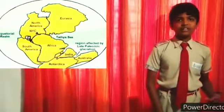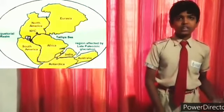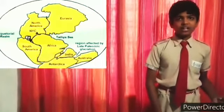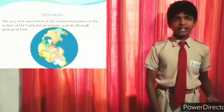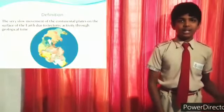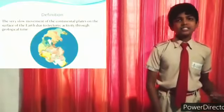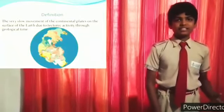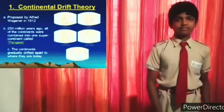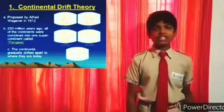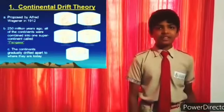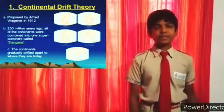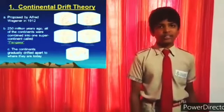It was divided into two forms, Laresia or Angara land and the Gondwana land. These two blocks are divided by the Titya Sea. Pangaea was derived from the Greek word which means the whole land.